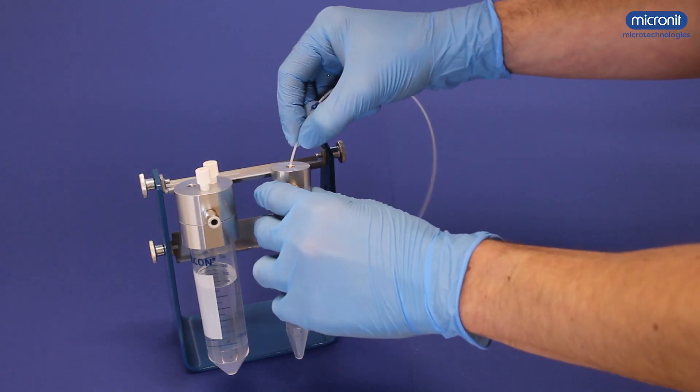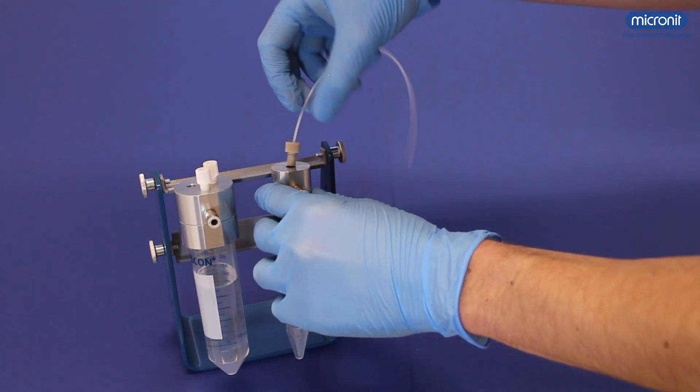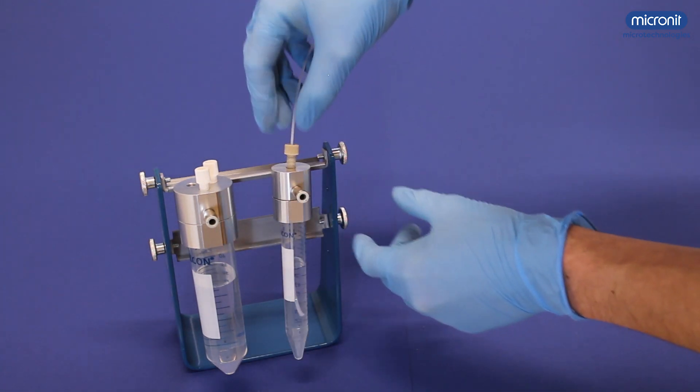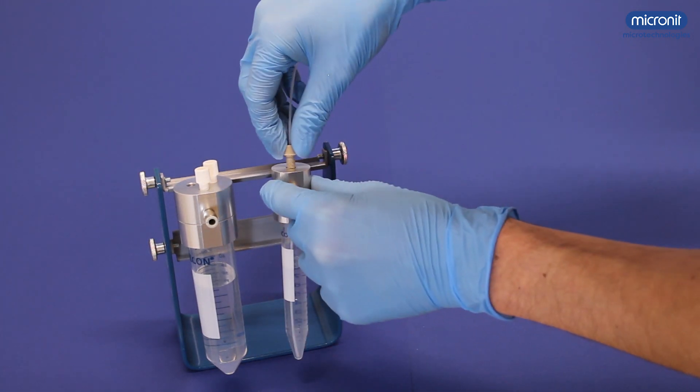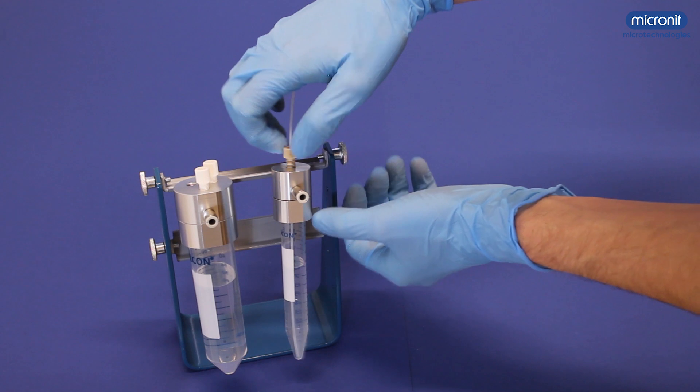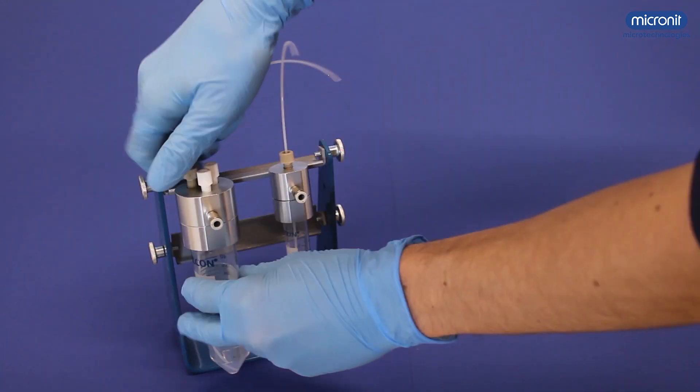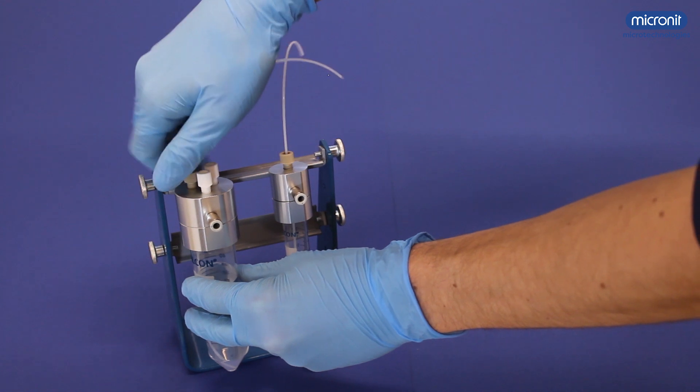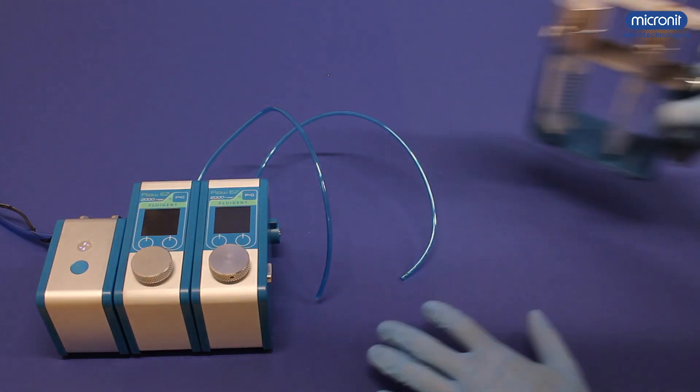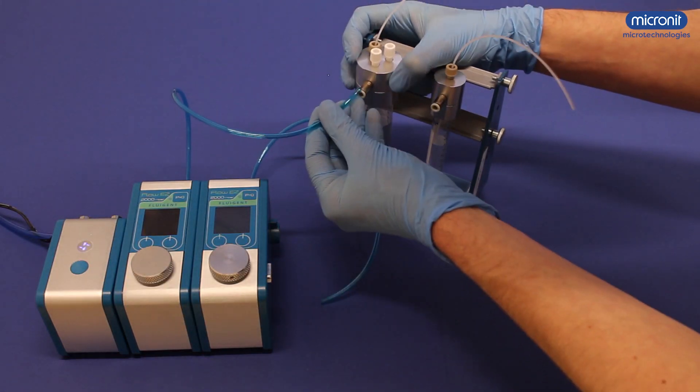Now put your tubing in the fluid reservoir and let the tubing almost touch the bottom. Screw to make an airtight connection. The same can be done with the other reservoir. Connect the pressure controlled pump to your reservoirs.